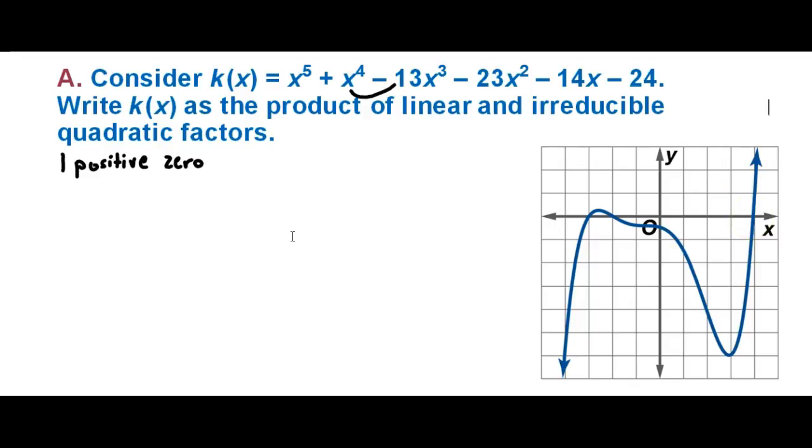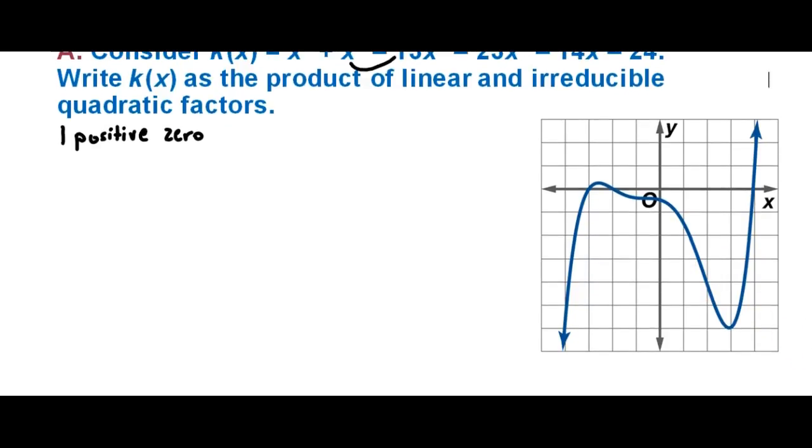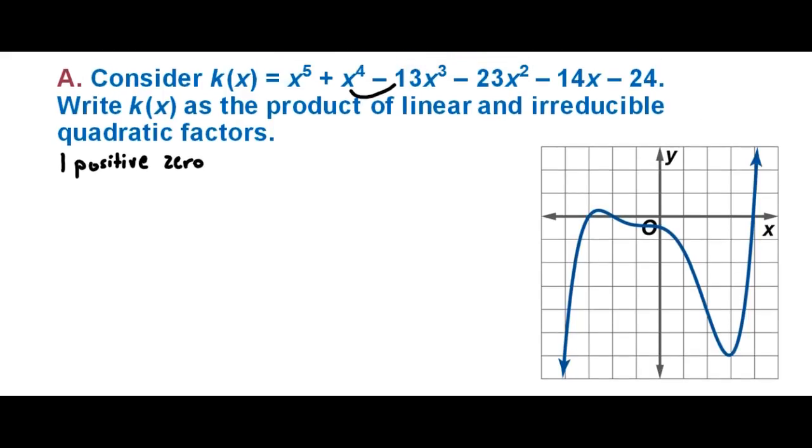What we can do is use synthetic division to make sure we get a remainder of zero when we put this function in. I'm going to put four up in my box here, and I'm going to get 1, 1, -13, -23, -14, and -24.